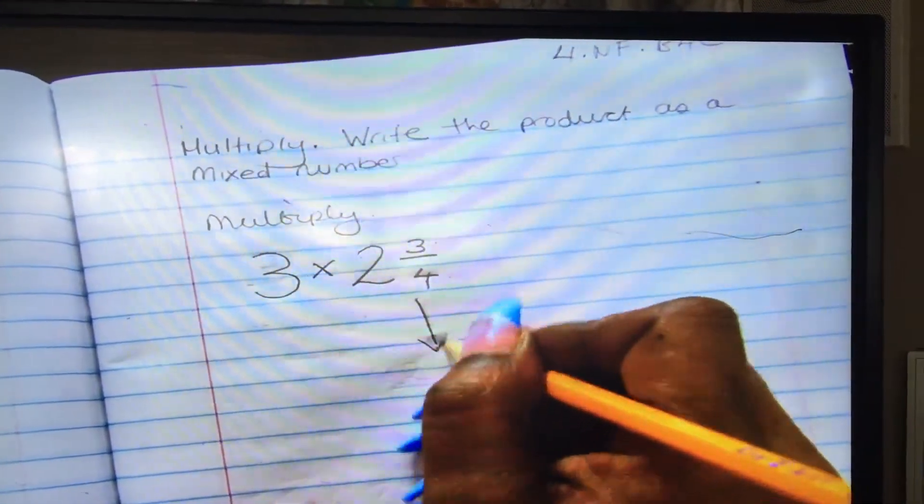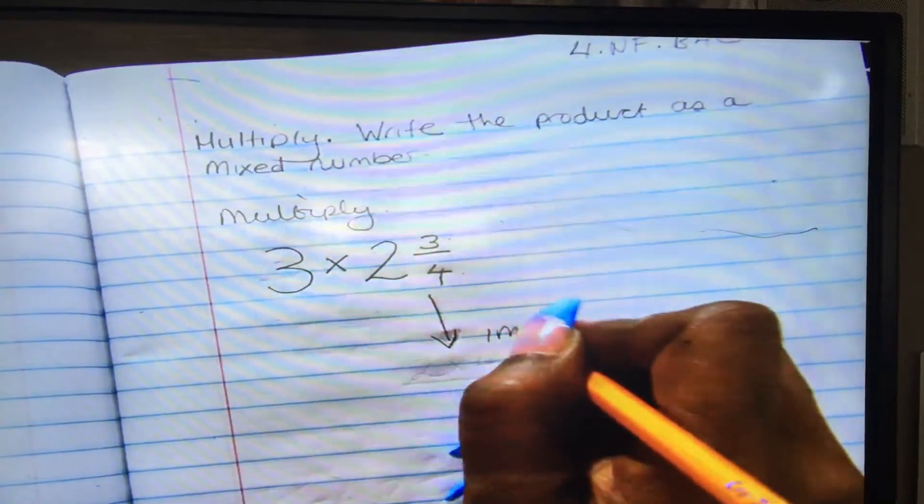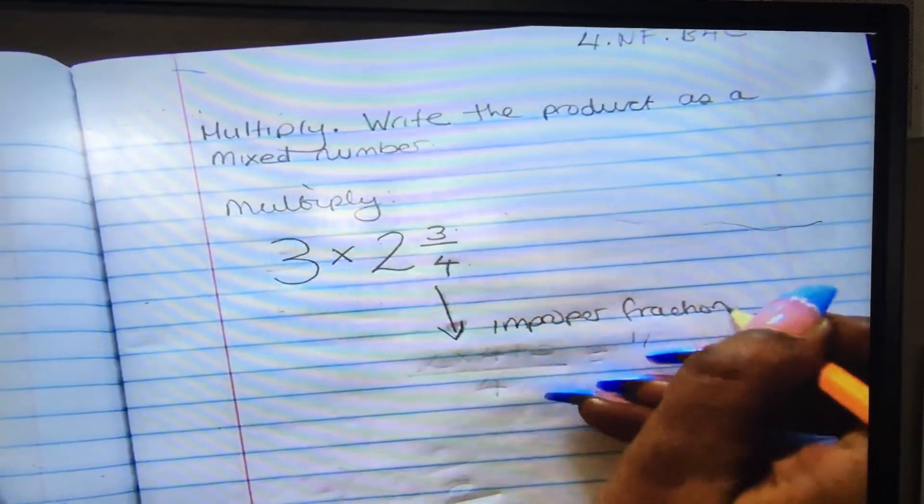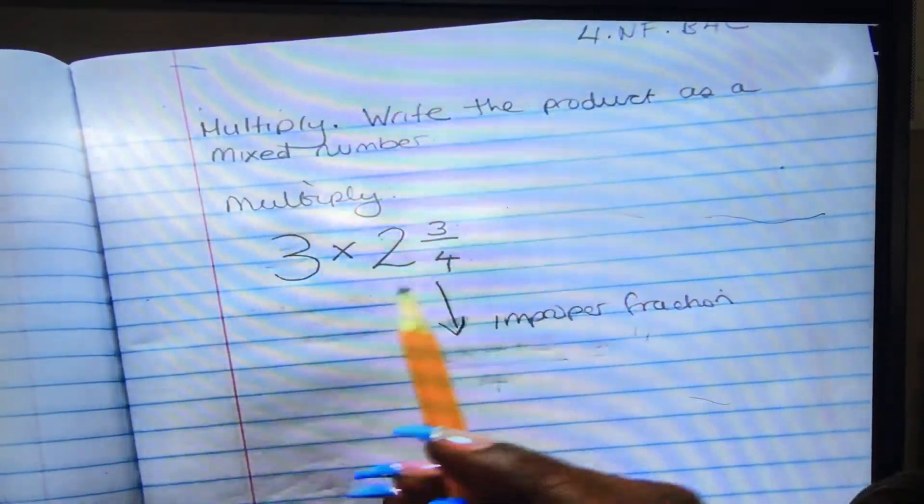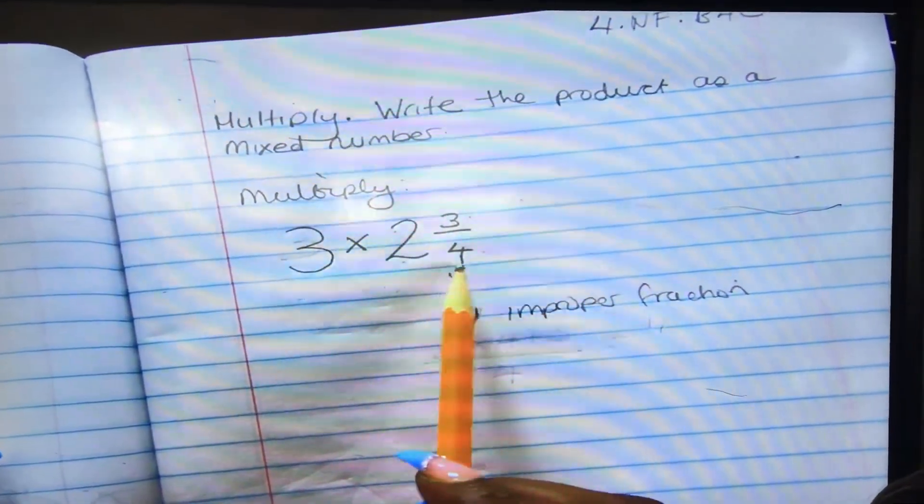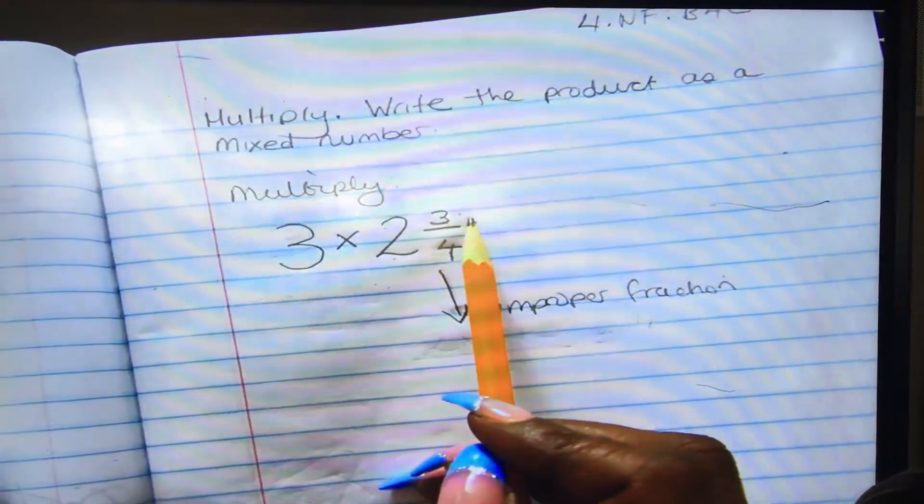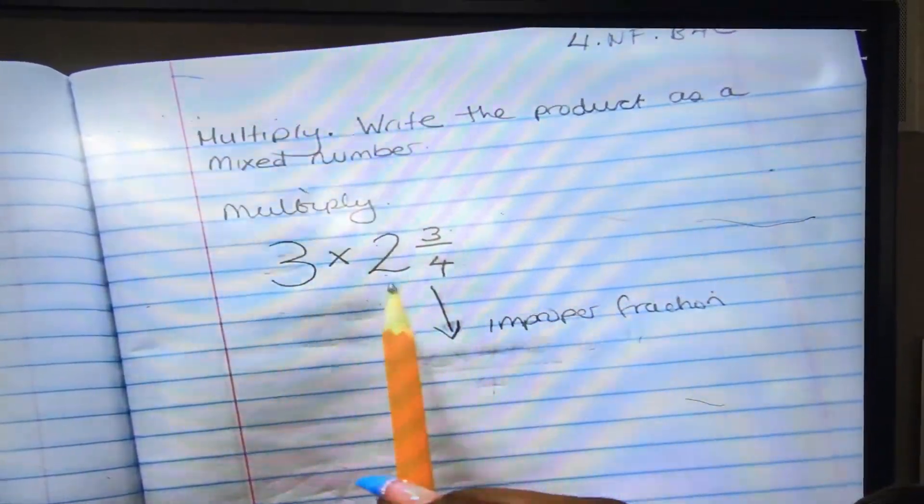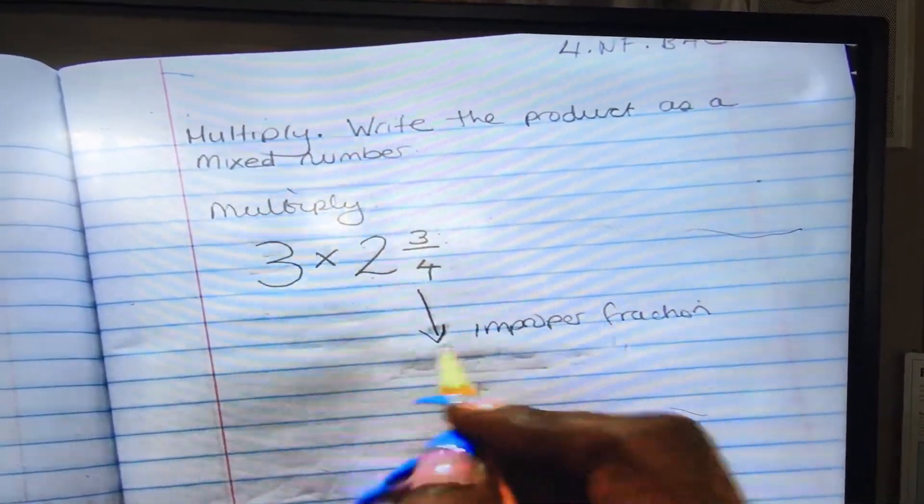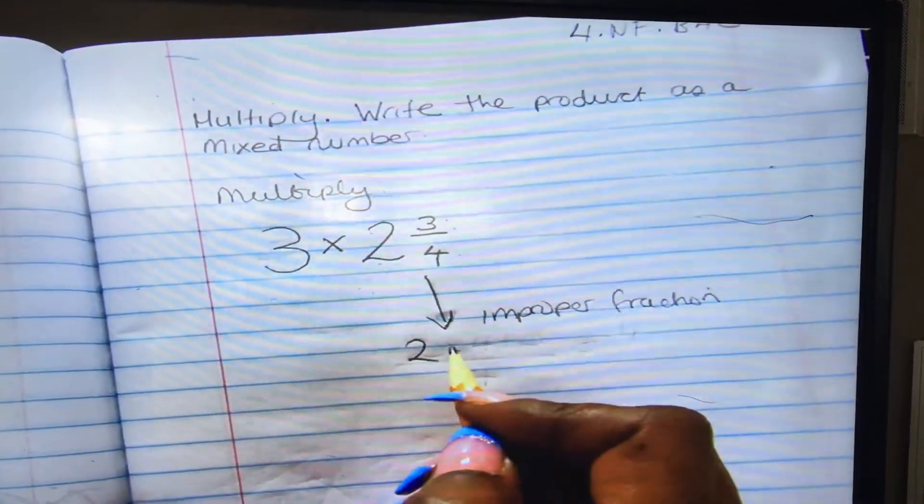How do we do that class? I told you that we should use the whole number times denominator plus numerator. Say it again: whole number times denominator plus numerator.